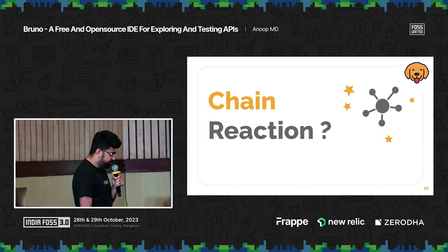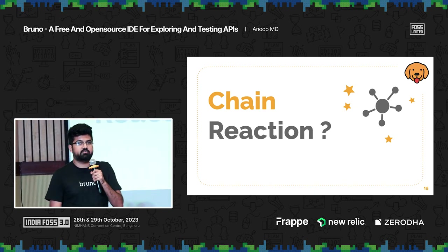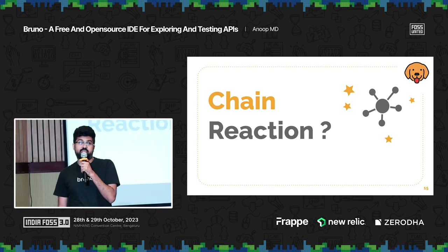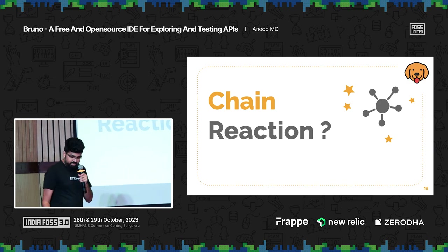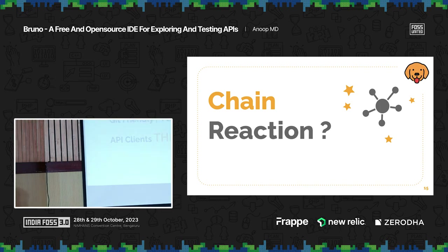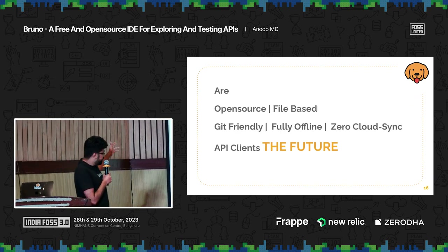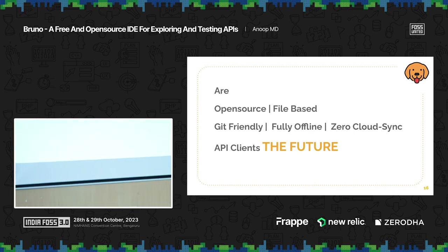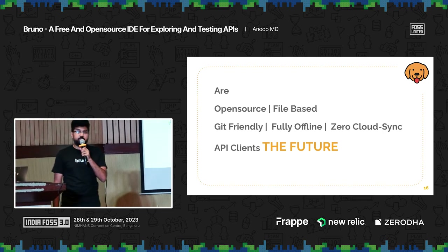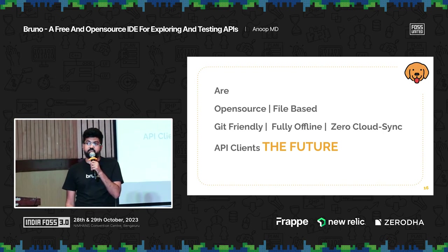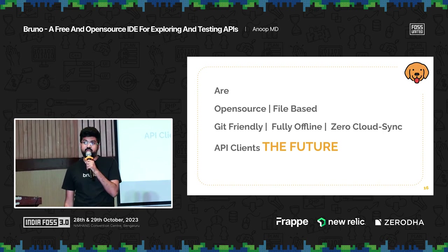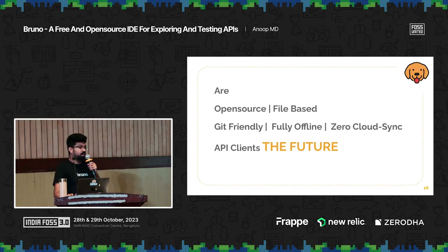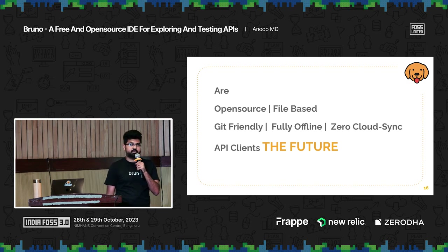We feel that we are nearing critical mass for a chain reaction. We have 20,000 users — what VCs call network effect. The next six months are going to be crucial. We have a hypothesis: are open-source, file-based, Git-friendly, fully offline, zero-cloud-sync API clients the future? We'll see the answer in six months. We believe it is the future. If it were not, I would not have worked on this app for two years. And if this prediction comes true, we will be the de facto choice of API client for developers.